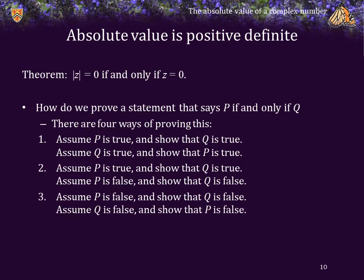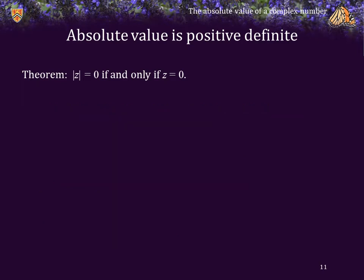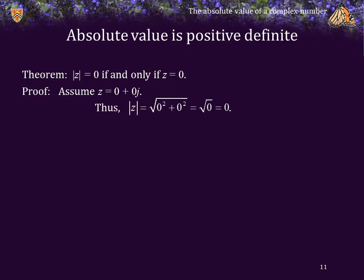Alternatively, here's another formulation: I can prove the other way, assuming q is true and false and showing that p is respectively also true and false. Thus, to prove this theorem, we will start by assuming that z is 0, or 0 plus 0j. In this case, it's easy to show that the absolute value of z is equal to 0.